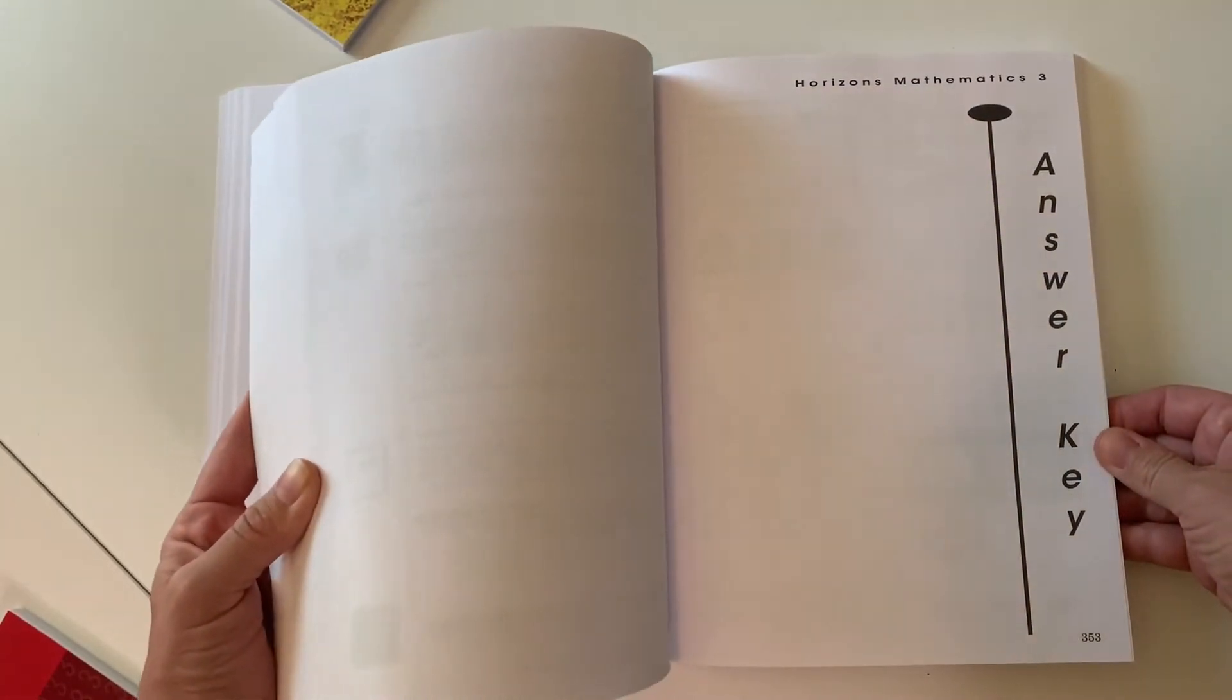I hope looking through that gave you a great idea of what Horizons Math Level 3 looks like. You know, searching for a curriculum can be really tricky. Always remember that you're never going to find the perfect one. I have to remind myself of this often. The thing is, the curriculum is just a guide. You'll have to make it work for you.